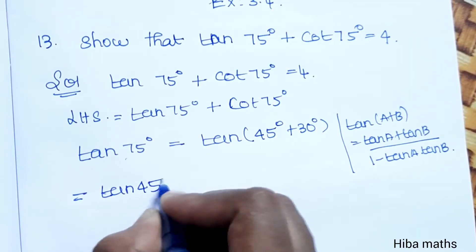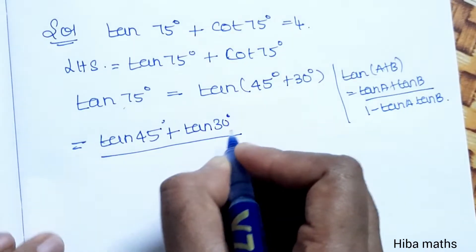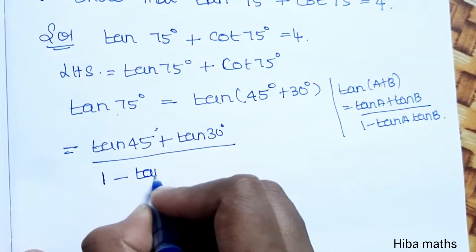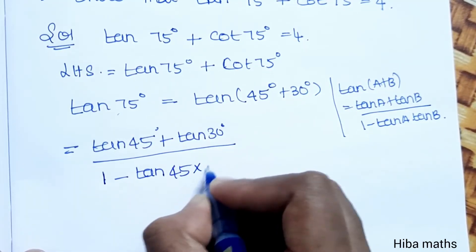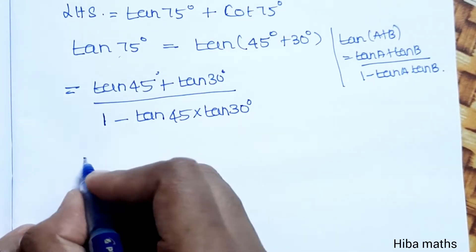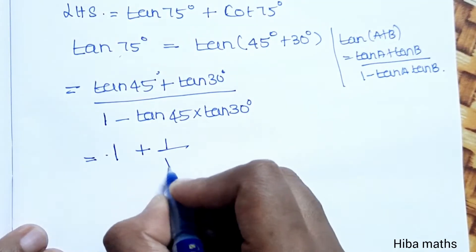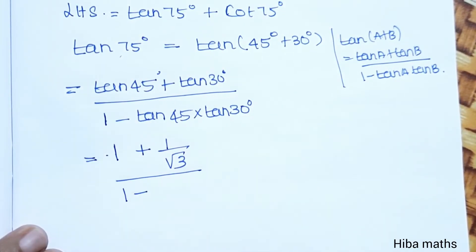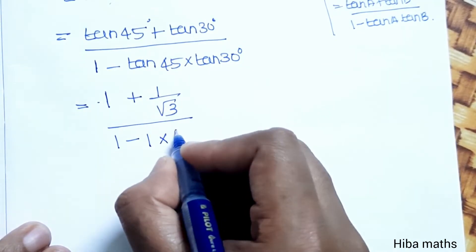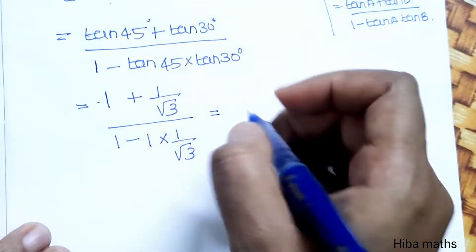Substituting: tan 45° + tan 30° divided by 1 − tan 45° · tan 30°. tan 45° = 1 and tan 30° = 1/√3. So we get: (1 + 1/√3) divided by (1 − 1 · 1/√3). Cross-multiplying by √3 gives (√3 + 1) divided by (√3 − 1).